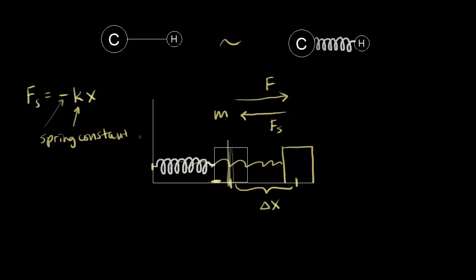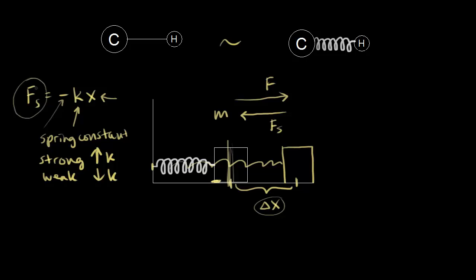If you have a stiff or strong spring, you have an increased value for k. If you have a loose or weak spring, a decreased value for k. X refers to the displacement from the original position. If you have a strong spring, the box experiences a stronger force according to Hooke's law. If you increase k, you increase the force of the spring, and also the more you stretch it — if you increase delta x — the stronger the force of the spring.